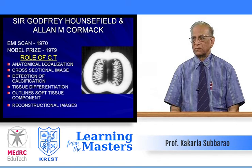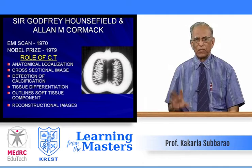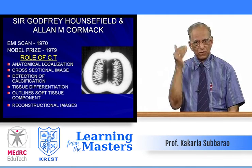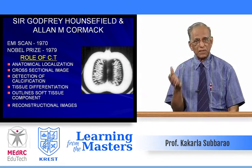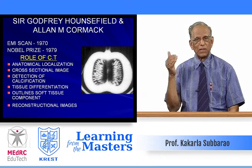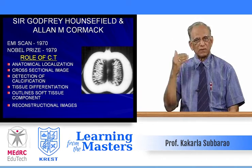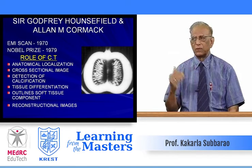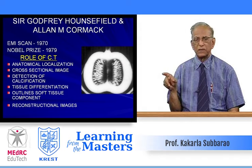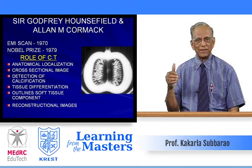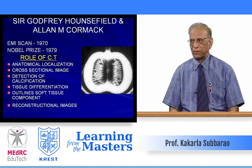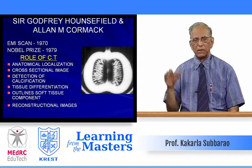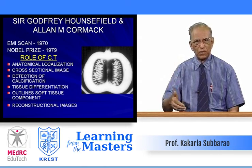The role of CT: just as a cross-section of an apple reveals what's inside — germs, seeds, and rotten portions invisible from outside — CT gives us cross-sections of bones and structures from head to foot. CT provides anatomical localization, cross-sectional images, detection of calcification, tissue differentiation (fat, muscle, tendon, bone, fluid), outlining the soft tissue component, and reconstructional images in coronal, sagittal, and other planes.